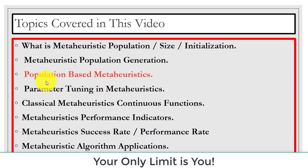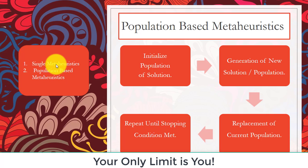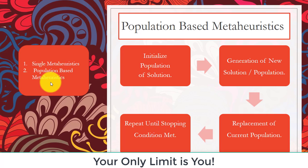Next is population-based metaheuristic. We have two types of metaheuristic: single metaheuristic and population-based metaheuristic. In single metaheuristic we have a single solution, while in population-based metaheuristic we have a set of points, a set of solutions, or a set of individuals — we work with multiple solutions simultaneously.